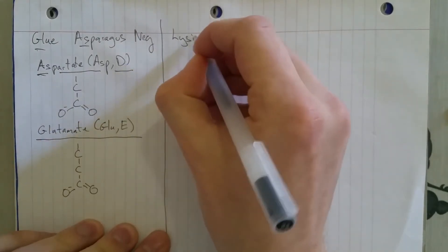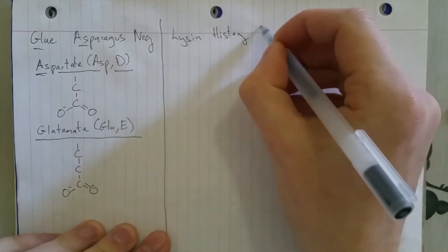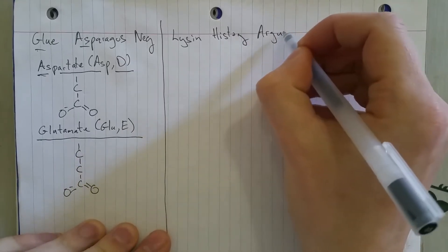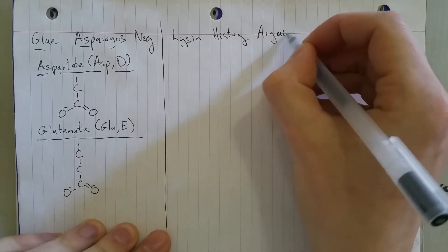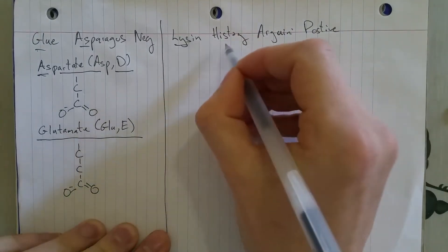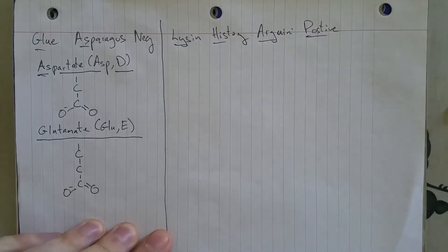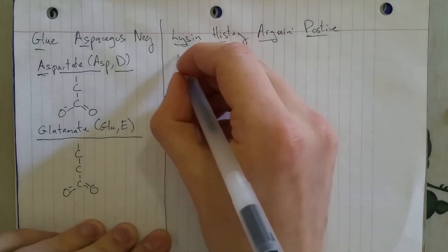listen, I have a history of arguing when I'm positive. I'm right. Listen, I have a history of arguing when I'm positive when I'm right. So, those are the positive amino acids.